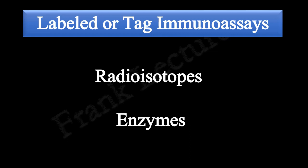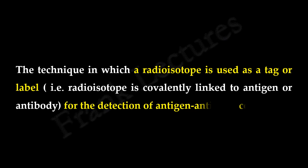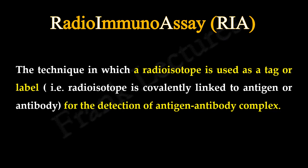In the last video lecture we understood what are tagger-labeled immunoassays. We also discussed two important tags: radioisotopes and enzymes. The technique in which a radioisotope is used as a tagger-label — that is, radioisotope is covalently linked to antigen or antibody for the detection of antigen-antibody complex — is known as radioimmunoassay.